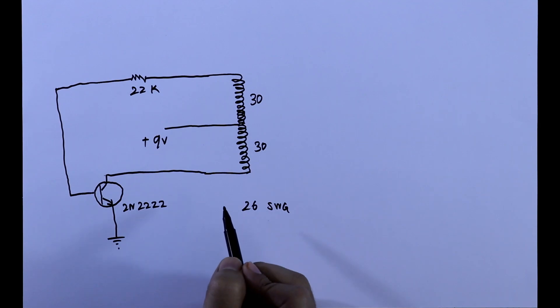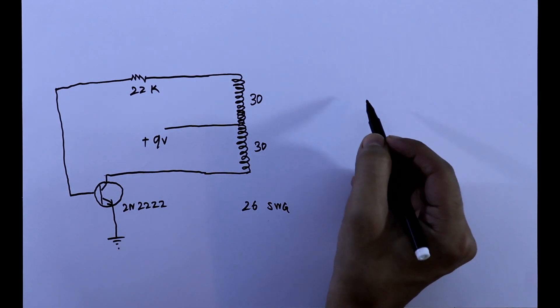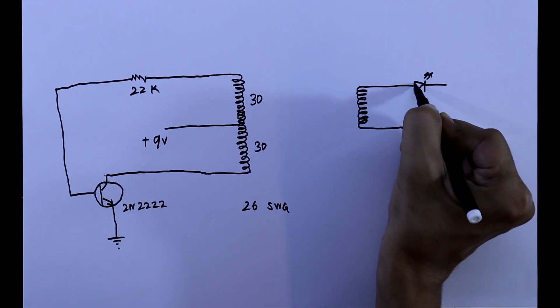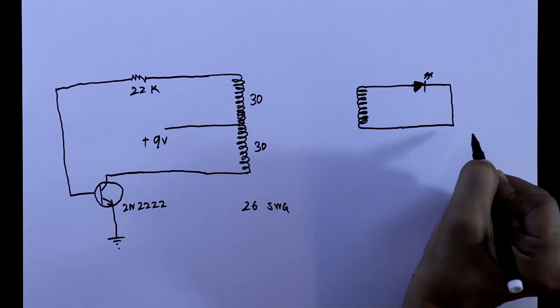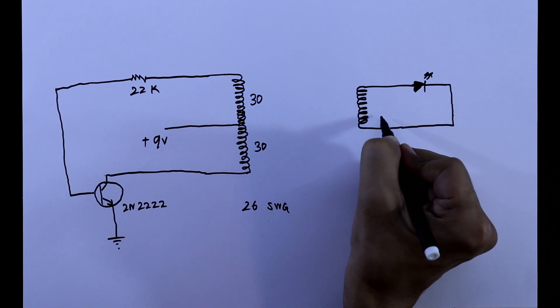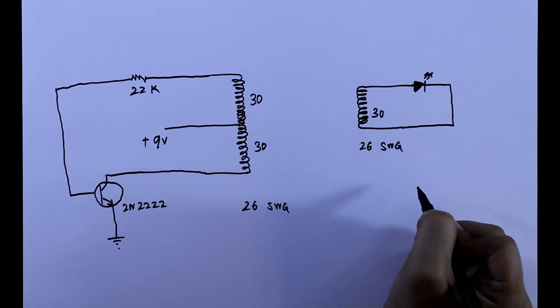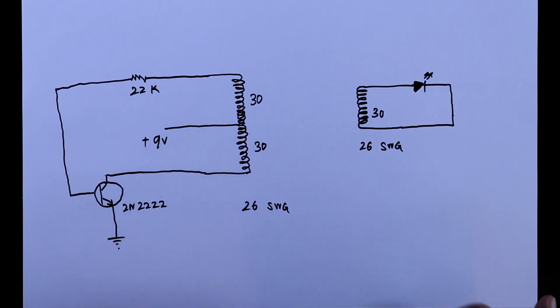This is the power supply side. And for the output side we need a simple coil. And here we will connect an LED. That's it. And it has 30 turns. Here also I will be using 26 SWG. So this is the simple circuit. Now we will see this on practical.